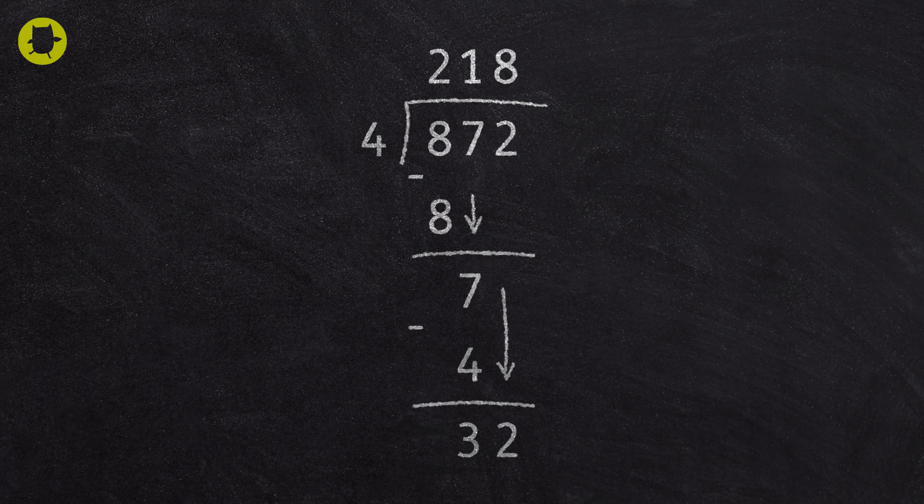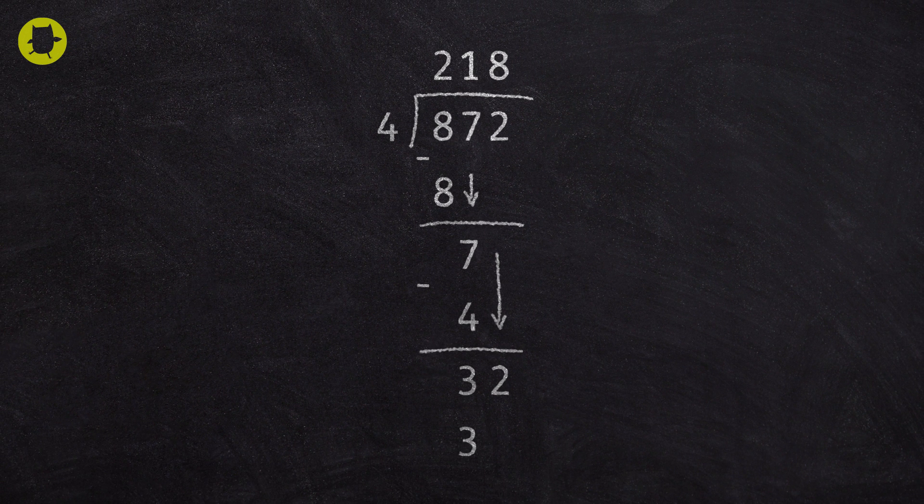Next, we ask, what is 8 multiplied by 4? The answer is 32, so we write the 32 at the bottom.